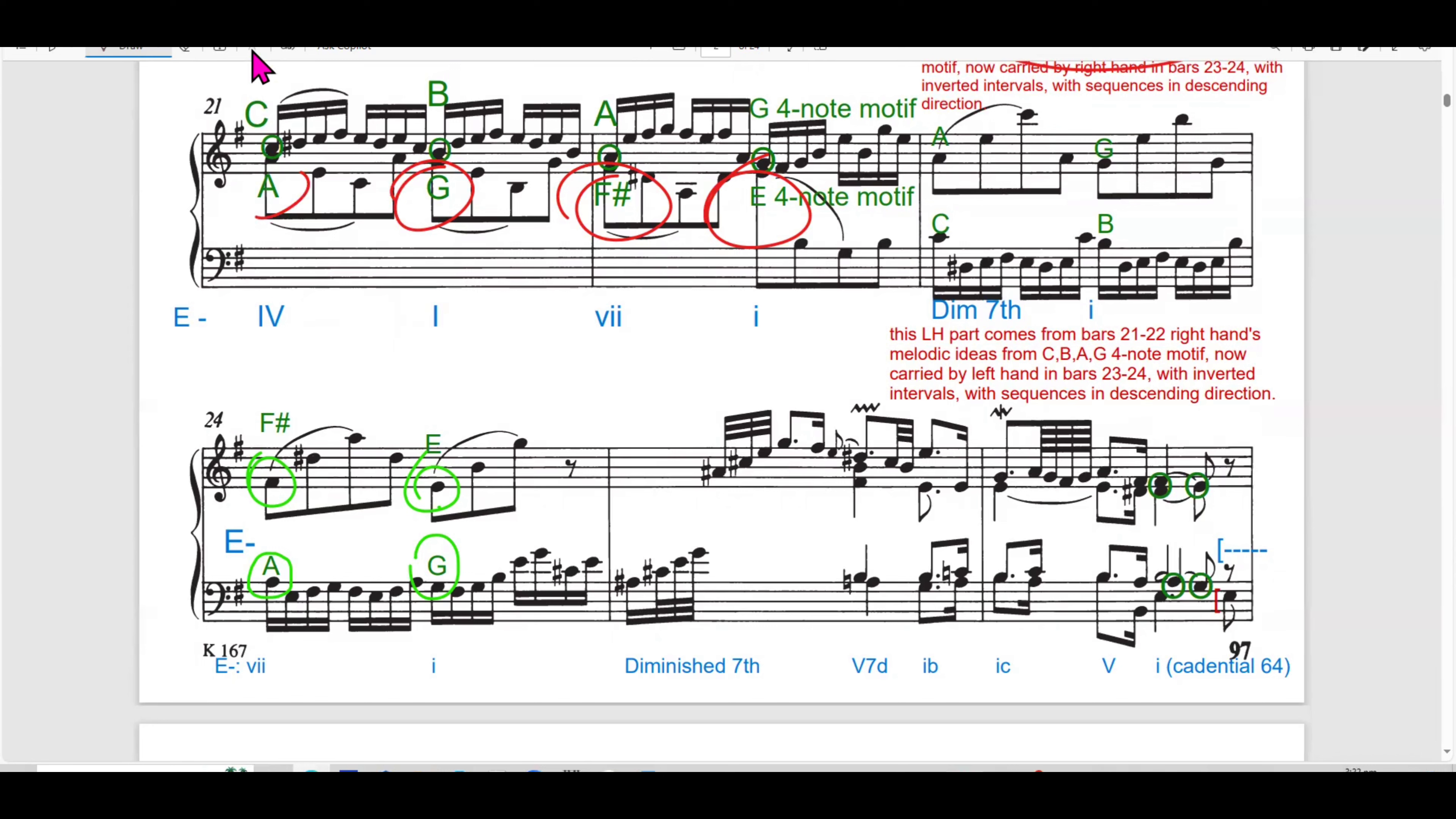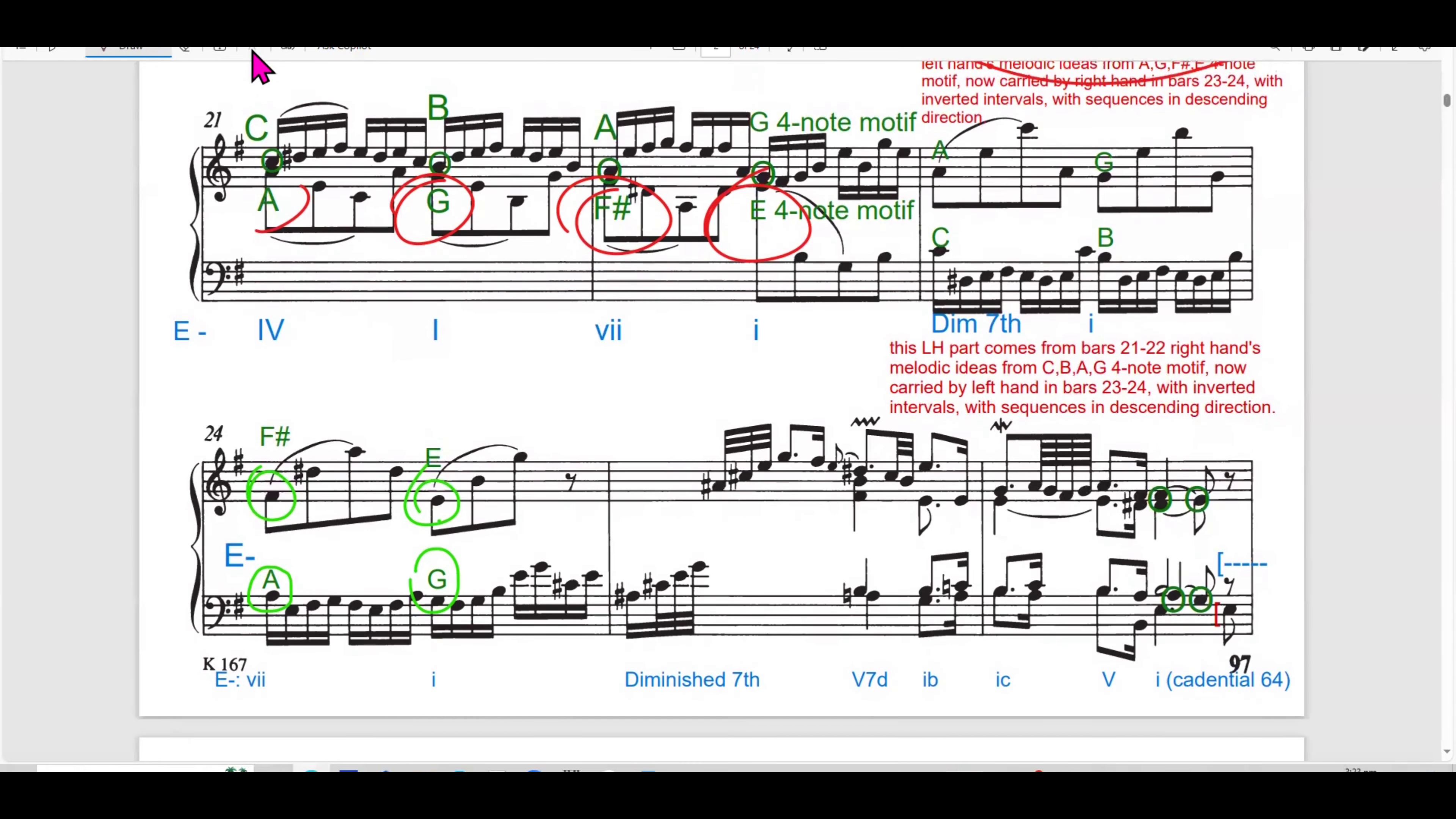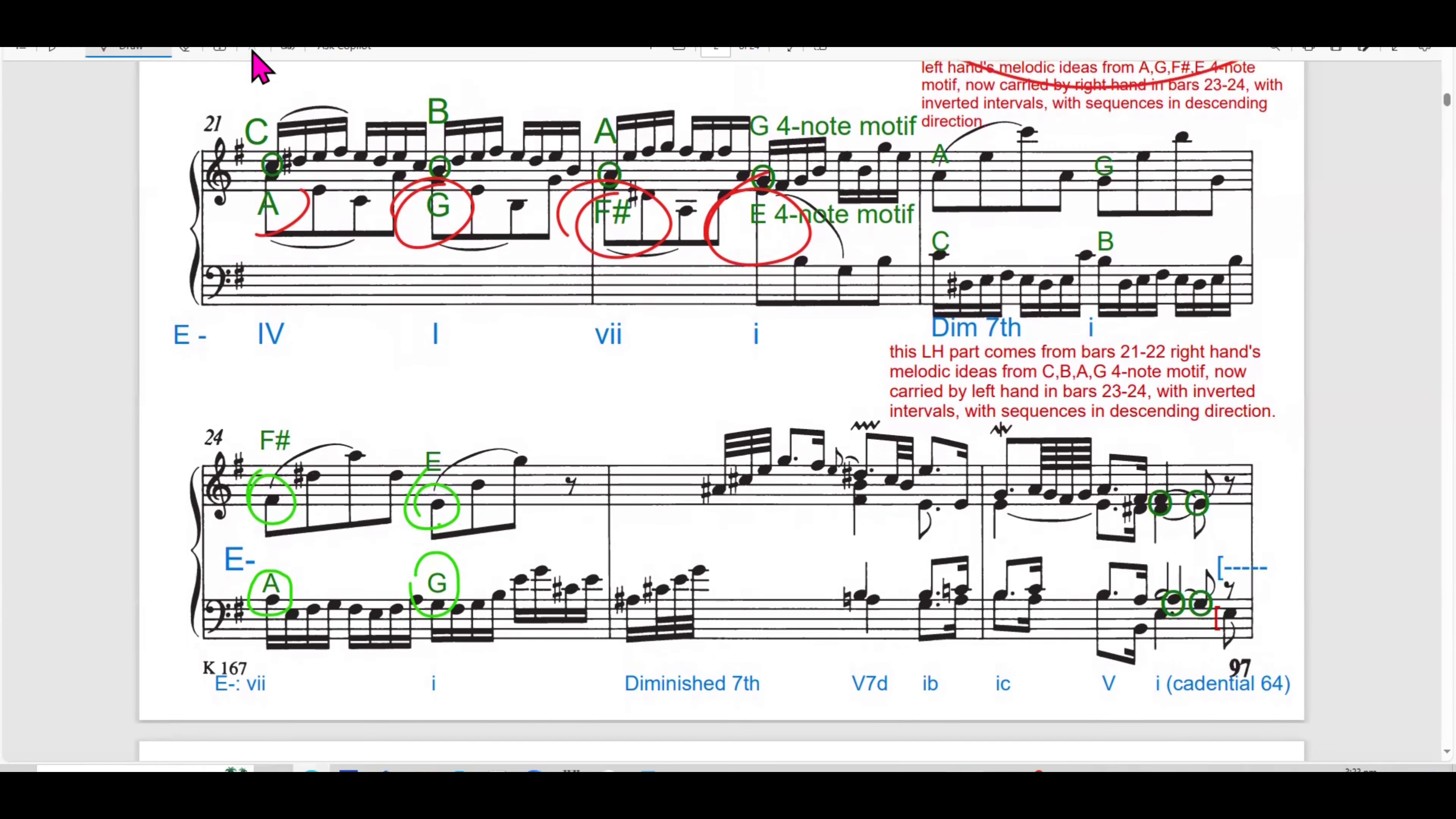So, in bar 20, Bach employed a circle of 5th progression in E minor and this harmonic device is commonly used to stabilize the tonality after movements of harmonic exploration, providing resolution. The circle of 5ths is expressed through both right and left hand, with the melodic material between the hands. This further reinforces the harmonic progression while maintaining a contrapuntal texture.